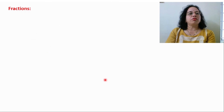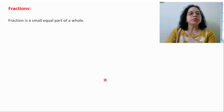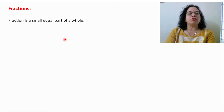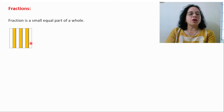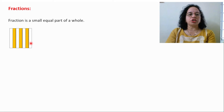Let us start with the recapitulation — fractions. What is a fraction? A fraction is a small equal part of a whole. That word 'equal' is very important. Here you can see that the total number of parts are 7, and out of 7, three parts are shaded. So the fraction for the shaded part is 3 by 7.